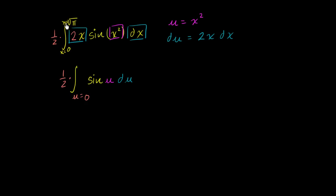Now what about here? What is u equal to when x is equal to the square root of π? Well, u is equal to the square root of π squared. Let me write this down. u is going to be equal to the square root of π squared, when x is equal to the square root of π, which is just equal to π.